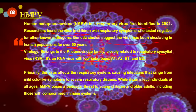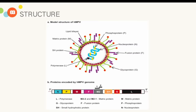HMPV is an RNA virus with four subgroups: A1, A2, B1, and B2. The virus primarily affects the respiratory system, causing infections ranging from mild cold-like symptoms to severe respiratory distress. While it can infect individuals of all ages, HMPV poses a particular threat to young children, older adults, and those with compromised immune systems such as patients with diabetes, HIV infection, or chronic illness.